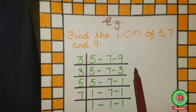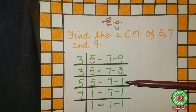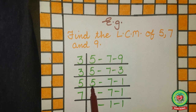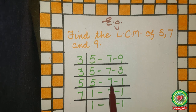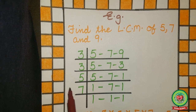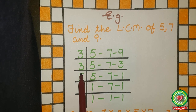Now 5 is a prime number, so divide by 5. 7 is not divisible by 5, so bring it down; below 1, one will come. Now 7 is a prime number, so divide 7 by 7. On the 7 times table, 7 comes at 1. That means LCM equals 3 × 3 × 3 × 5 × 7.